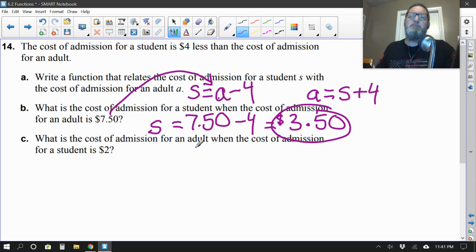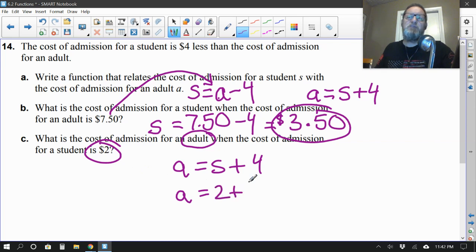And here, what is the cost of admission for an adult when the cost of admission for a student is $2? Oh, I think I'm going to use the other equation for this one because now they want me to figure out the adult. So I'm going to use this equation over here. Okay. So I'm going to take this equation. A equals S plus 4. But what did they say the student price was? Oh, here it is. The student price is $2. So now it becomes A equals, well, student price is 2. So 2 plus 4. Oh, that's easy. 2 plus 4 is 6. There we go. So in that case, the adult price would have been $6. All righty. So there we go.